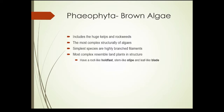Next we'll have a look at brown algae, Phaeophyta. This includes the kelps and the rockweeds — these are the most complex algae in terms of structure. The simplest ones are highly branched filaments, and the most complex really start to look more like land plants. Kelp is a type of brown algae; they have a holdfast that holds them to rocks and the substrate in the water.